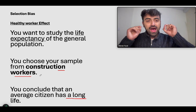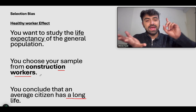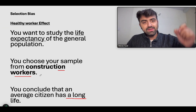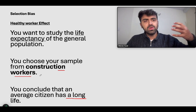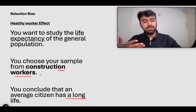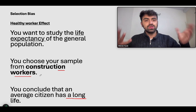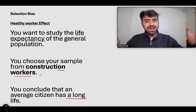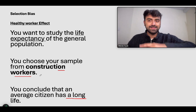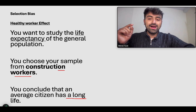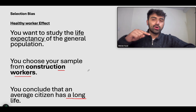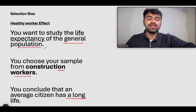Healthy worker effect and Berkson bias are both very specific types of sampling bias. Healthy worker effect deals with very fit people or athletes. For example, you want to study the muscle mass of an average person, then you go and measure the muscle mass of a team of athletes and conclude that the average person has very high muscle mass — that is the healthy worker effect. So healthy worker effect is when you take a very small group of very healthy and fit people and apply that conclusion to the general population.